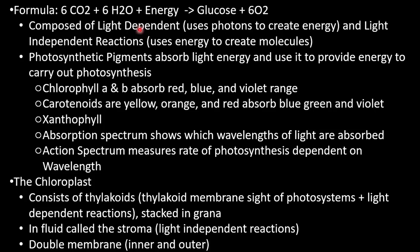The formula for photosynthesis is 6CO2 + 6H2O + energy → glucose + 6O2. Light-dependent reactions use photons from the sun; light-independent reactions use energy to create molecules. Photosynthetic pigments absorb light energy in the light-dependent reactions. Chlorophyll a and b are the main pigments, absorbing red, blue, and violet light. Carotenoids are yellow, orange, and red, absorbing blue, green, and violet.